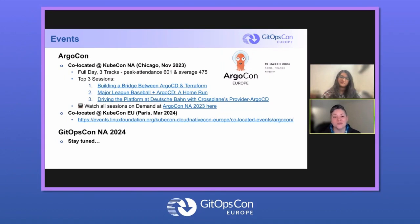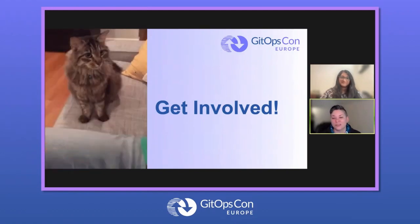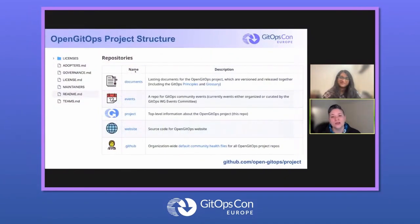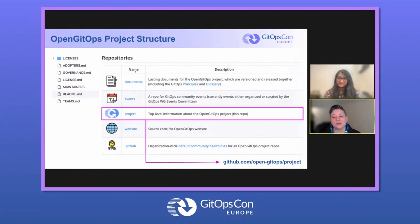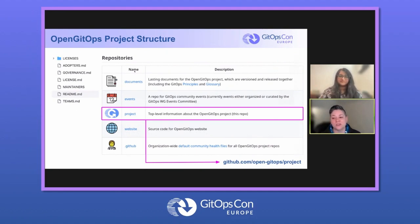How can you get involved with Open GitOps and the GitOps Working Group? You can find the Open GitOps project on GitHub at github.com/open-gitops. The main entry point for anyone new is the project repo. Please have a look at docs, where you'll find the principles and glossary, events if you want to attend our community project meetings, and the website. We can always use some extra help — if any of those things interest you, please go to the Open GitOps project in GitHub and check those out.